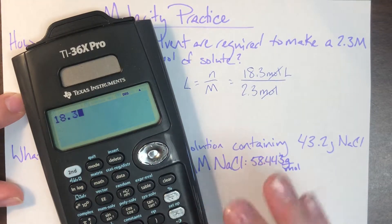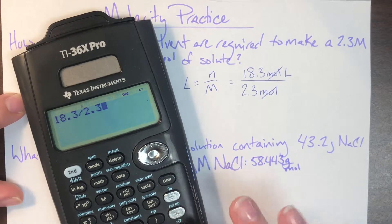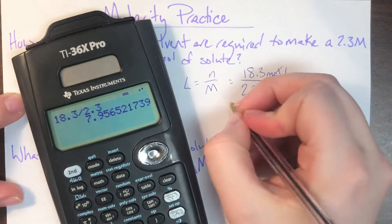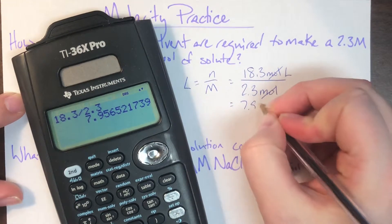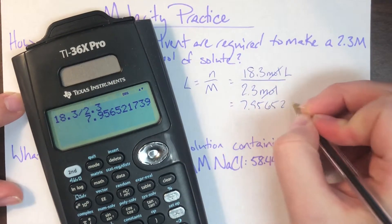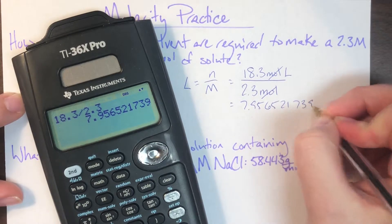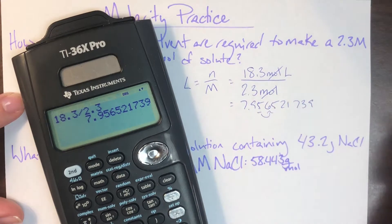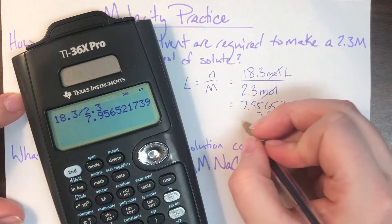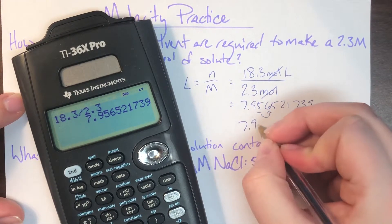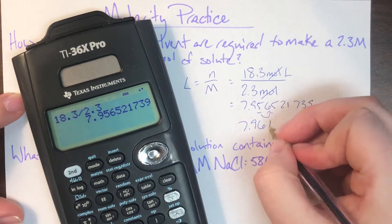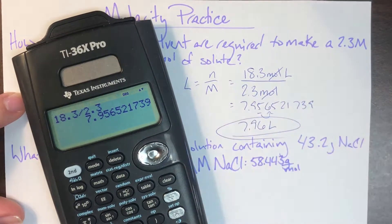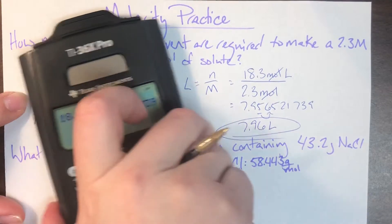So 18.3 divided by 2.3 gives me the number 7.956521739. That's a long gross number. I'm going to round it to two decimals. 6 does make me round up. So I will turn this into 7.96, and that is going to be liters of whatever solvent I am using.